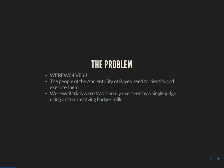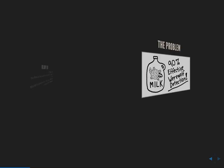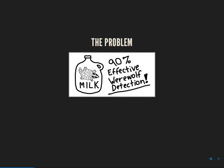Werewolf trials were traditionally overseen by a single judge using a ritual involving badger milk. Badger milk, as everyone knows, is a 90% effective werewolf detection. That means 10% of the time when you use it on a werewolf, it'll tell you the person's actually a human. 10% of the time when you use it on a human, it'll tell you they're actually a werewolf. The rest of the time it gives accurate results.